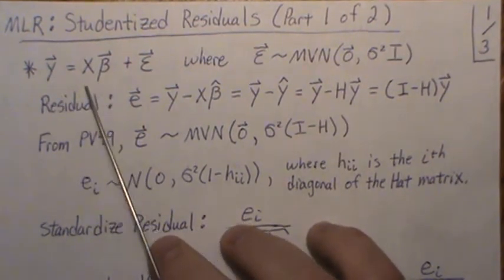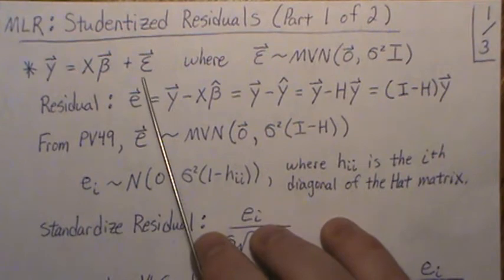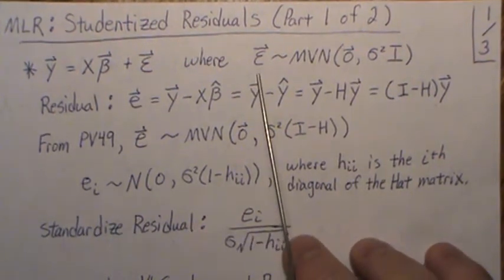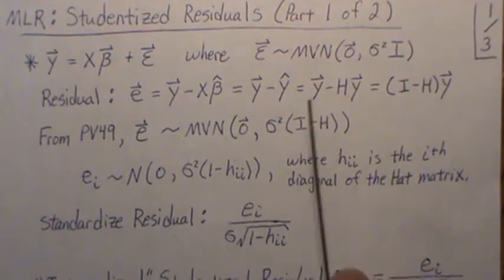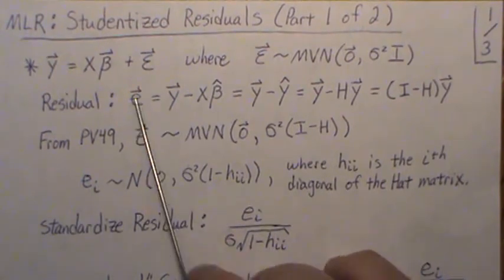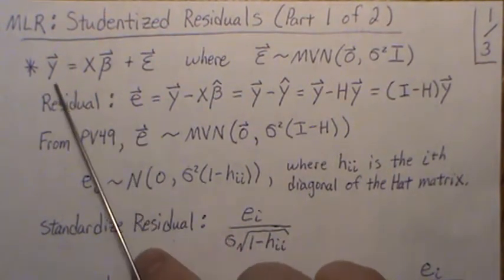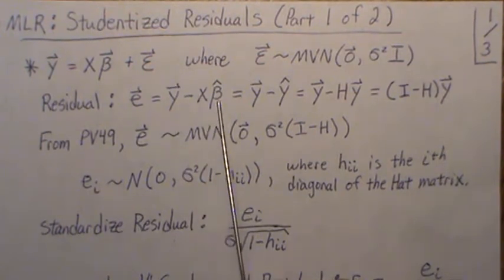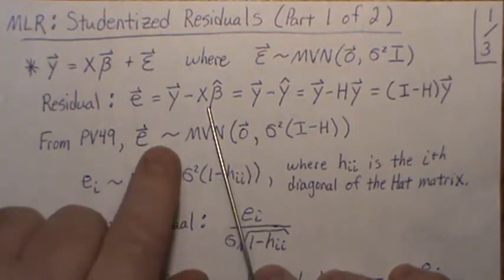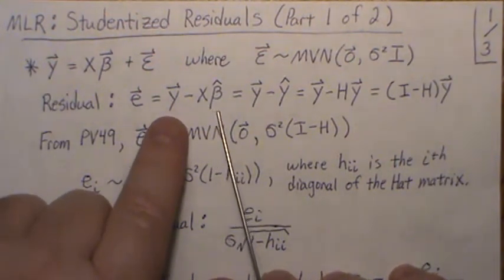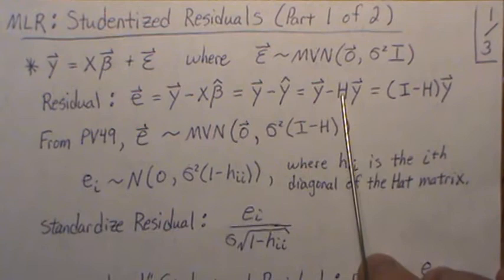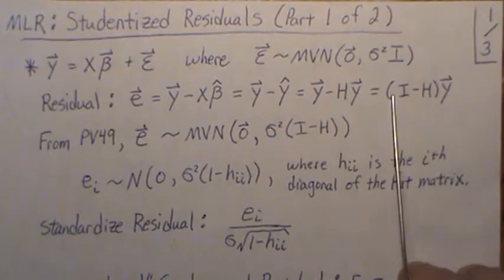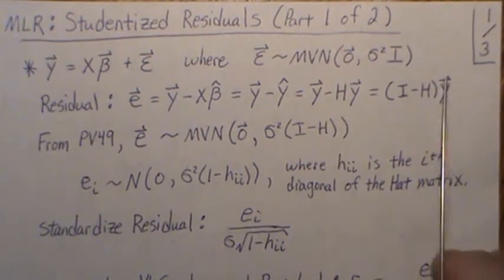We're in the linear model setting, so our model is y = Xβ + ε, and we assume the errors are multivariate normal with mean zero and covariance matrix σ²I. The residual is a sample estimate for this error term. Once we estimate the unknown β parameter, we get the residual, and the fitted value is the hat matrix H times y, so the residuals in matrix form are (I - H)y.